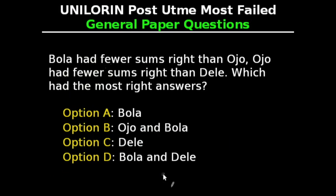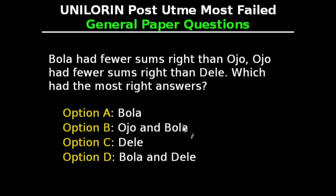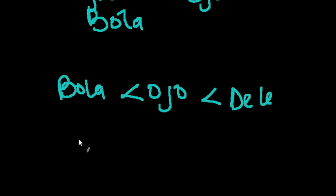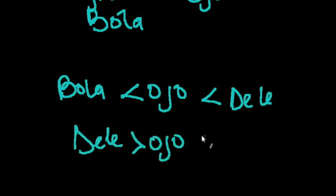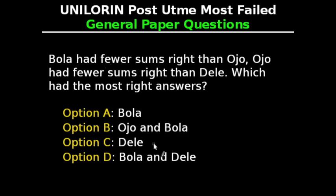Dele had the most right answers. Mathematically: Bola < Ojo, and Ojo < Dele, which can be written as Dele > Ojo > Bola. So Dele is greater than both Ojo and Bola, and the correct answer to this question is Option C, Dele.